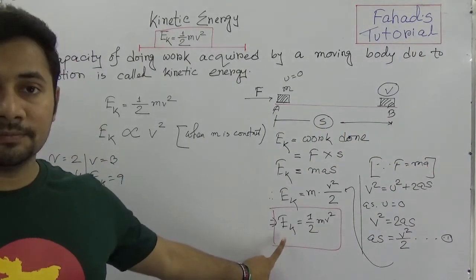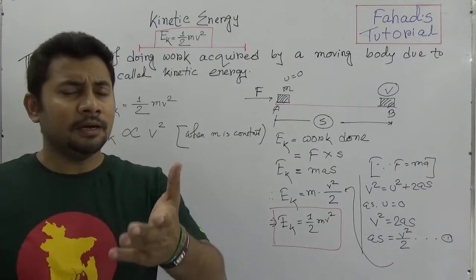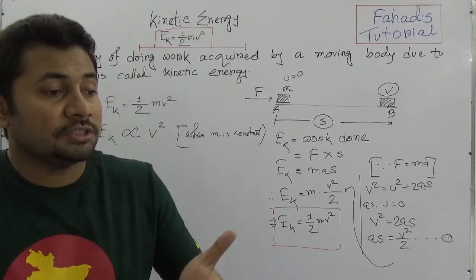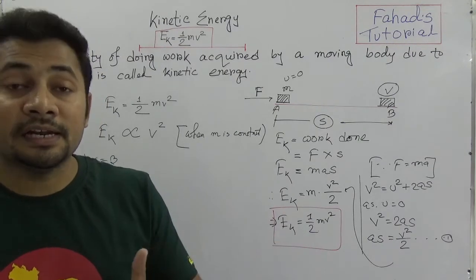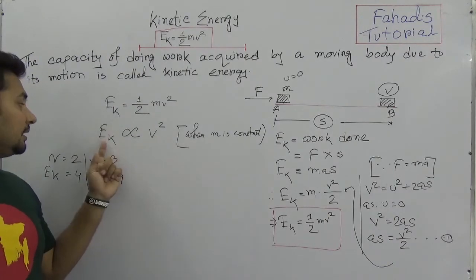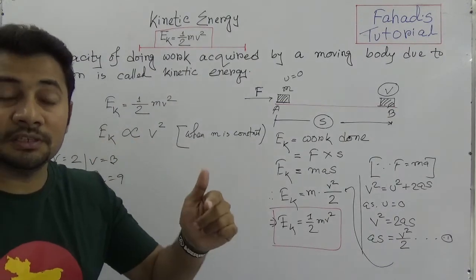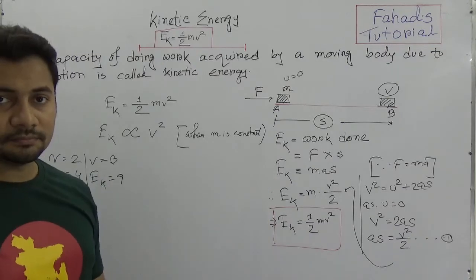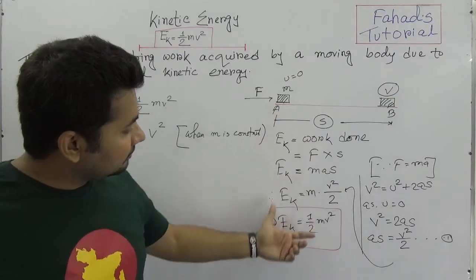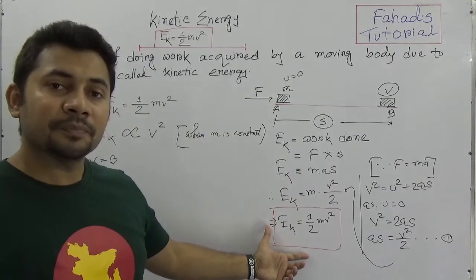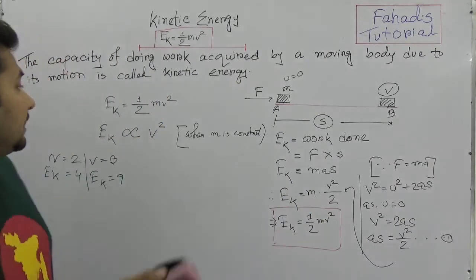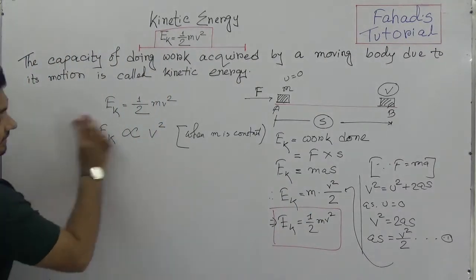This is very important. When a question from your exam paper — in an MCQ or anywhere — asks how velocity and kinetic energy are related, you can see this is a square proportion: EK is proportional to V². We can derive these equations this way, so please do it on your own. I can also give you some examples of calculating kinetic energy.